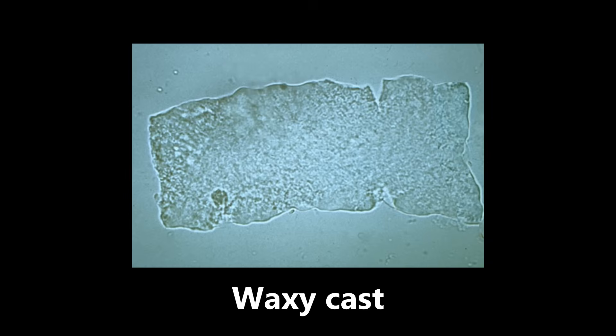This next image is an example of a waxy cast — our third cast of the video. A little less high yield, but important to be exposed to. This waxy cast looks kind of like a crumpled, torn little piece of paper and is seen commonly in end-stage renal disease. To summarize the casts: fatty casts in nephrotic syndrome, red blood cell casts in acute glomerulonephritis and malignant hypertension, and waxy casts in end-stage renal disease.